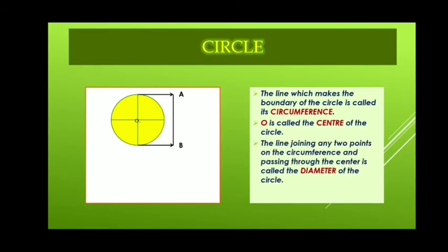Next is diameter. The line joining any two points on the circumference and passing through the center is called the diameter of the circle. Here, length AB denotes diameter of the circle.